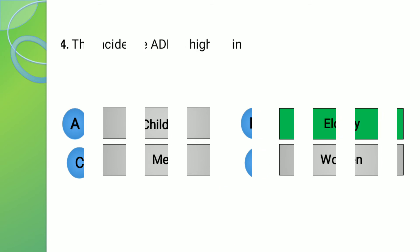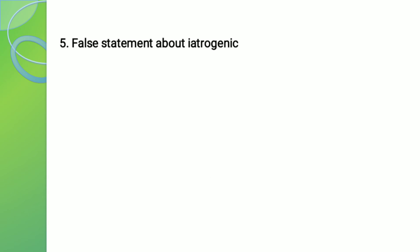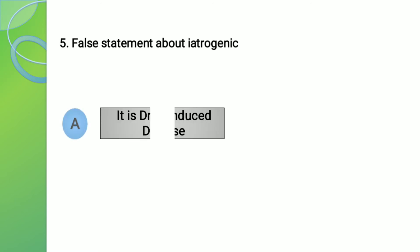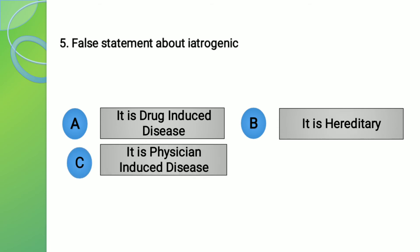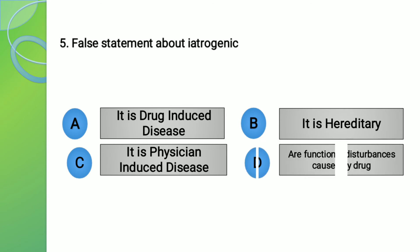Moving to question number 5. The question is: false statement about iatrogenic disease is? The options are: A - It is drug induced disease, B - It is hereditary, C - It is physician induced disease, and D - These are functional disturbances caused by drug.